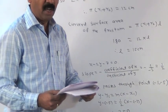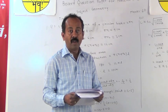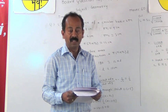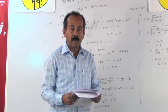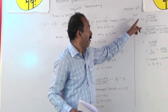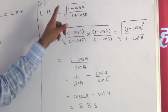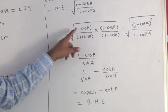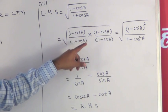Let us go for the third example in which we have to prove that square root of 1 minus cos a upon 1 plus cos a is equal to cosec a minus cot a. In such type of examples always we have to solve left hand side. So, left hand side is equal to under root of 1 minus cos a upon 1 plus cos a.